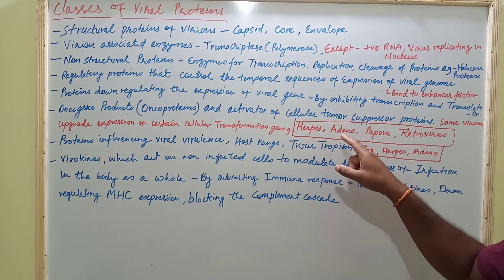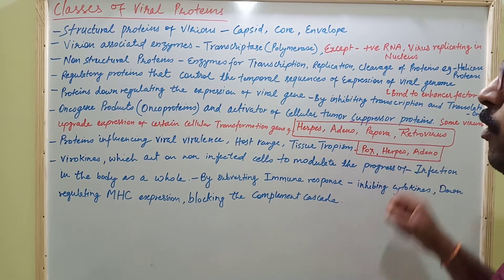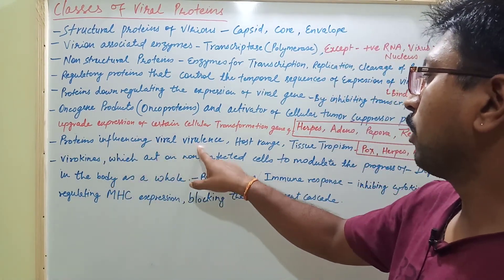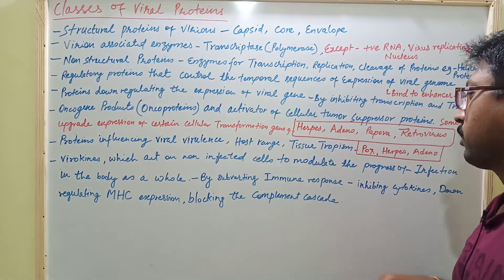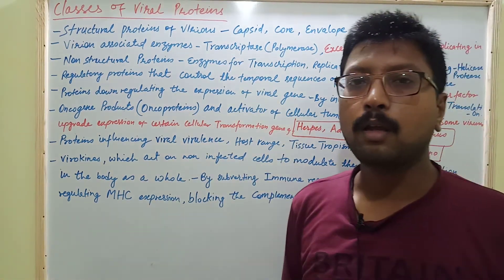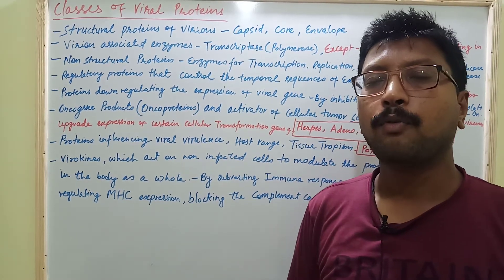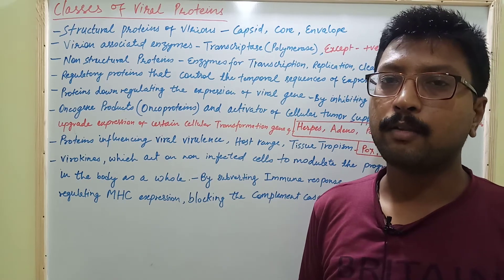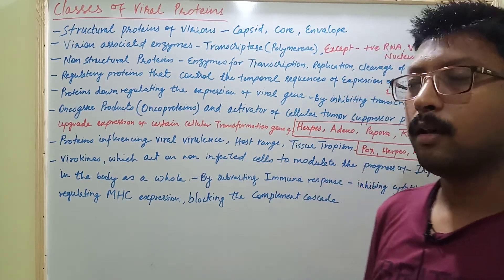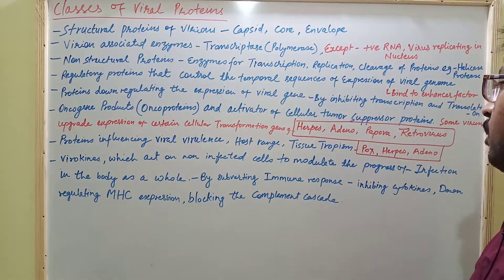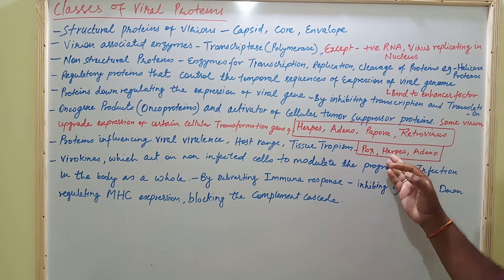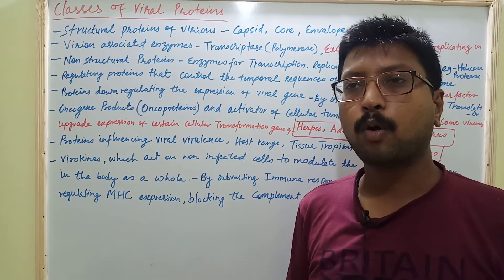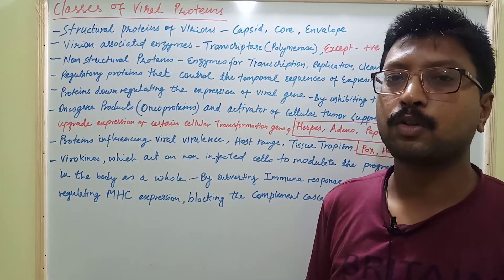For example, the viruses responsible for transformation of a cell into a tumor cell are herpesvirus, adenovirus, papova virus, and retroviruses. Next are proteins that influence viral virulence, host range, and tissue tropism. In the case of poxvirus, herpesvirus, and adenovirus, they have a very broad host range, and this broad host range is due to the production of these proteins.